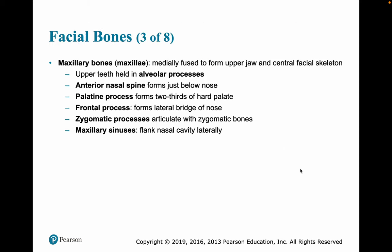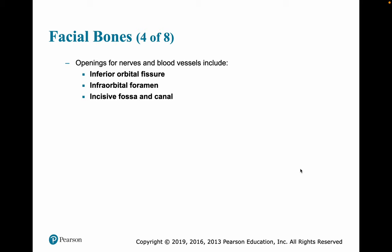The maxillary bones, or maxillae, are fused to form the upper jaw and the central facial skeleton. Upper teeth are held in alveolar processes. Features include the anterior nasal spine, the palatine process, the frontal process, the zygomatic process, and the maxillary sinuses. There are openings for nerves and blood vessels, including the inferior orbital fissure, the infraorbital foramen, and the incisive fossa and canal.